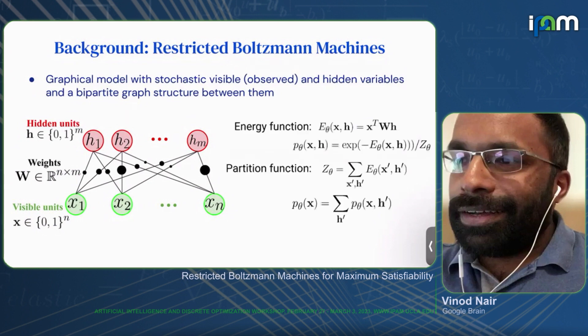You can think of it as a Markov random field with this structural restriction — hence the name restricted Boltzmann machines. This graphical model represents a distribution over the visible and hidden units via an energy function. Given a complete assignment for both X and H, you compute the energy function using an expression as a function of the weights. Then you take the exponent of the negative energy, normalize using the partition function Z of theta, and that defines the joint distribution over both X and H.